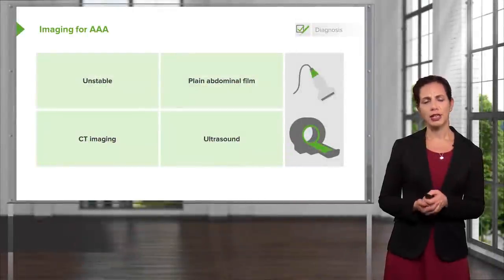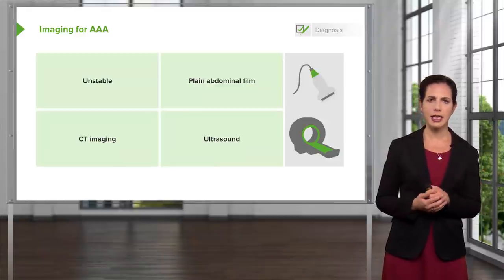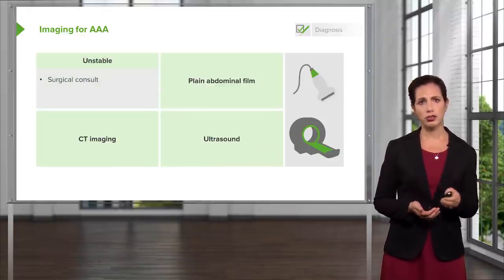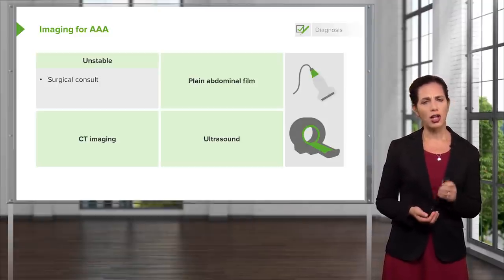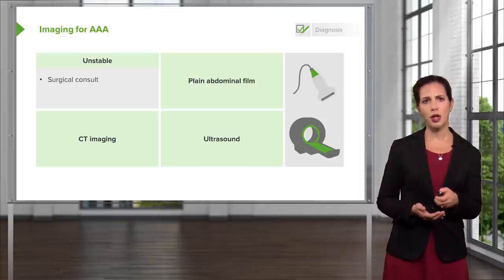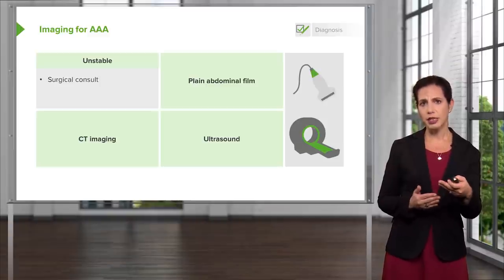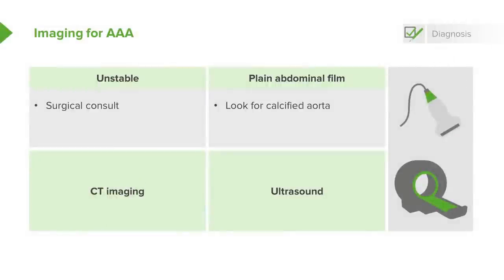For imaging: if you're very worried and the patient has a known history of AAA and is very unstable, one of the first things you want to do is get a surgical consultation. Get your on-call surgeon on the phone, involve them early, make sure they're aware of your concerns, and potentially have them come evaluate the patient and take them to the operating room. You can also get a plain abdominal film — you could potentially see a calcified aorta, which would raise concern about atherosclerosis or disease of the aorta.